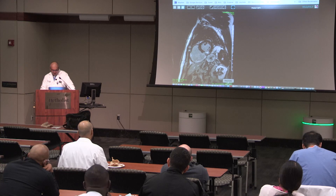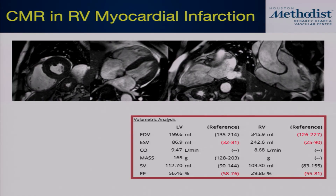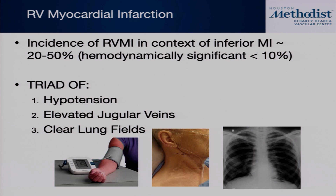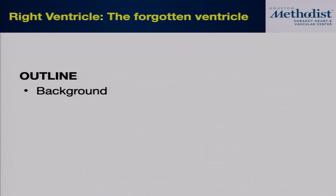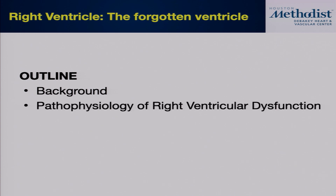The point is: we tend to focus on the LV, but when someone is sent to assess viability after an inferior infarct, don't forget about the RV. RV infarct is associated with worse prognosis — if someone has an RCA infarct with associated RV infarct, their prognosis is not as good as without the RV involvement.